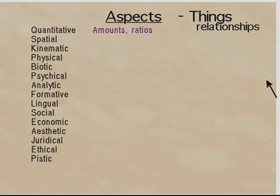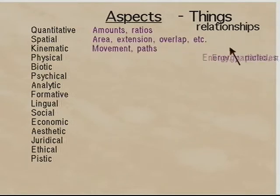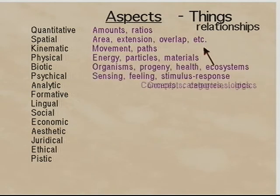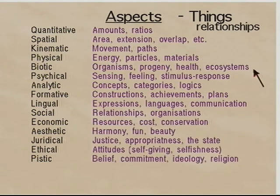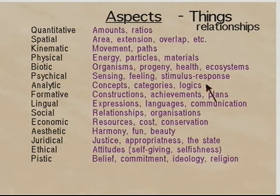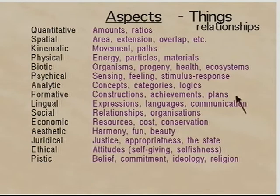Each aspect defines or enables a different type of thing to be meaningful. The spatial aspect is to do with areas and overlaps, the kinematic with movement, the physical with energy and materials. The biotic aspect is to do with life — so organisms, progeny, health, ecosystems. The psychical or sensory aspect is to do with sensing and feeling. The analytic aspect is to do with distinction — by which we distinguish concepts, make categories, and have logic and non-contradiction. The formative aspect is the aspect of making, shaping, construction, achieving, planning, technology, and human history.